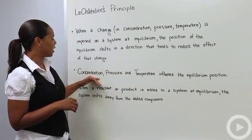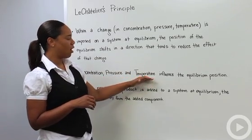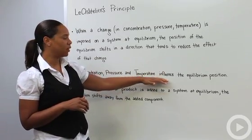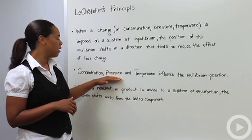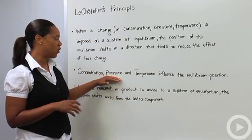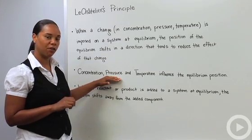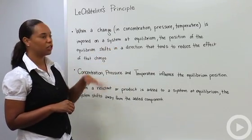So I said concentration, pressure, and temperature are the main factors that influence the equilibrium position. Pressure is related to volume as well, and so I'll discuss that quickly at the end, how those two are related in terms of Le Chatelier's principle.